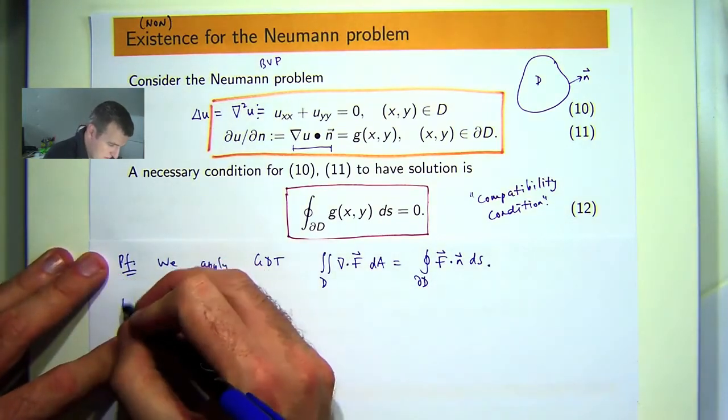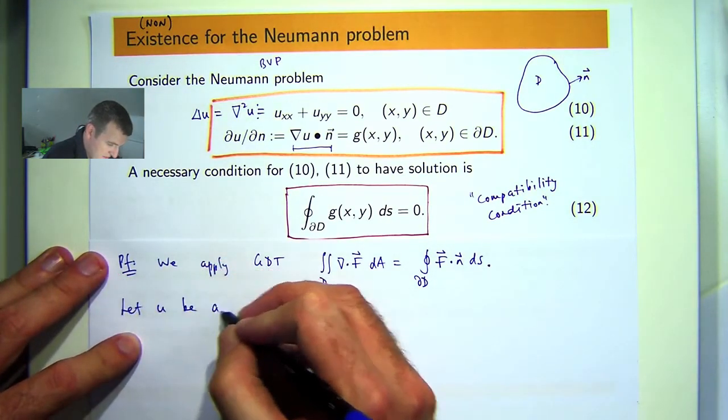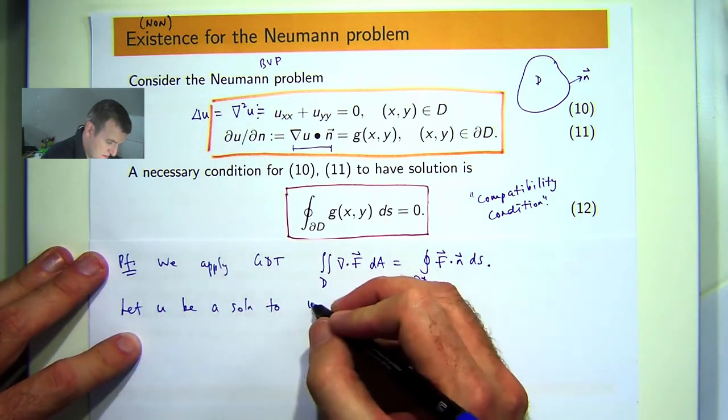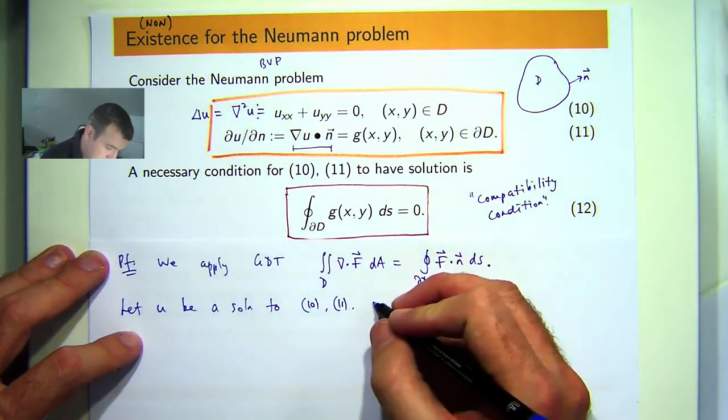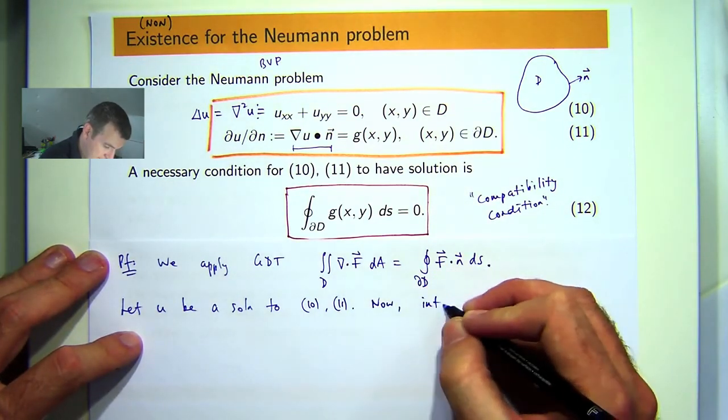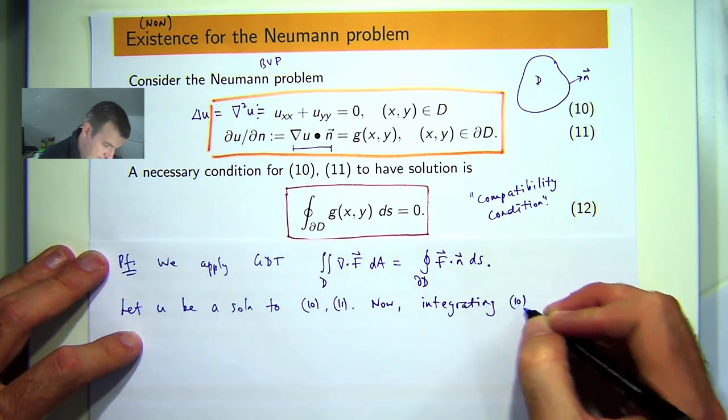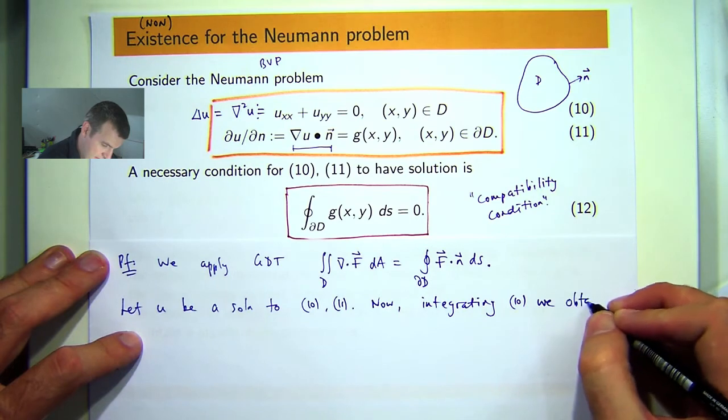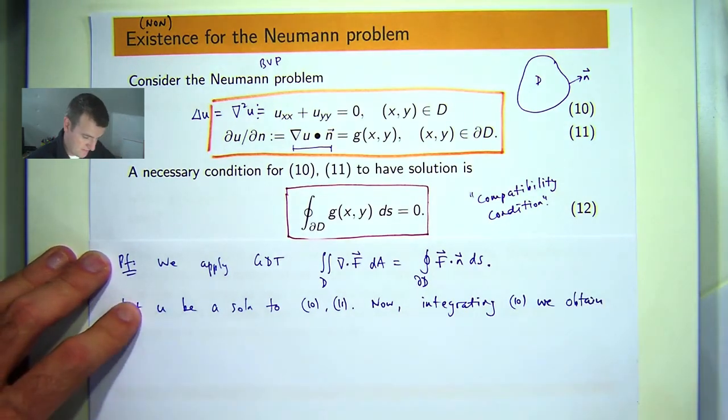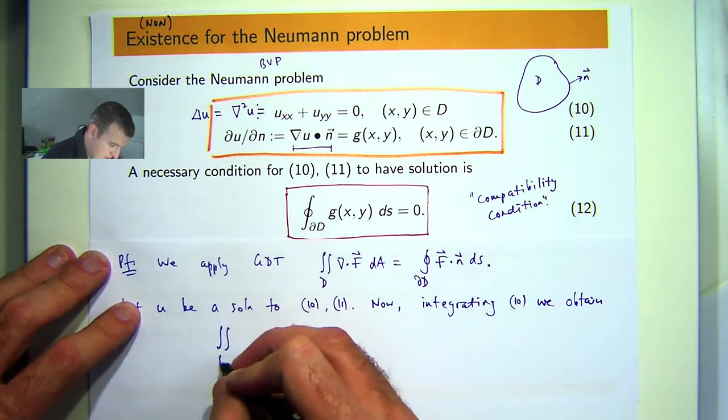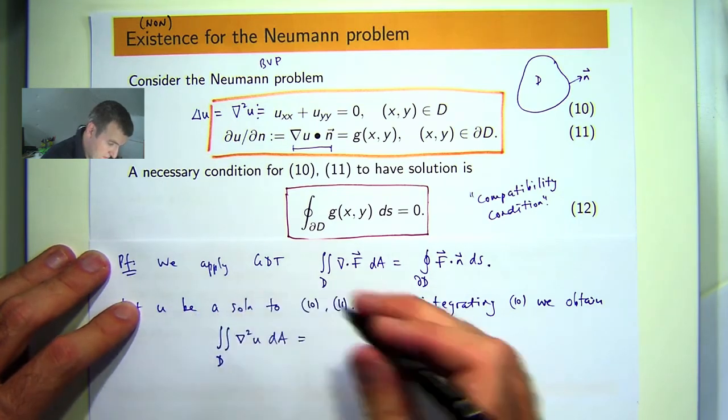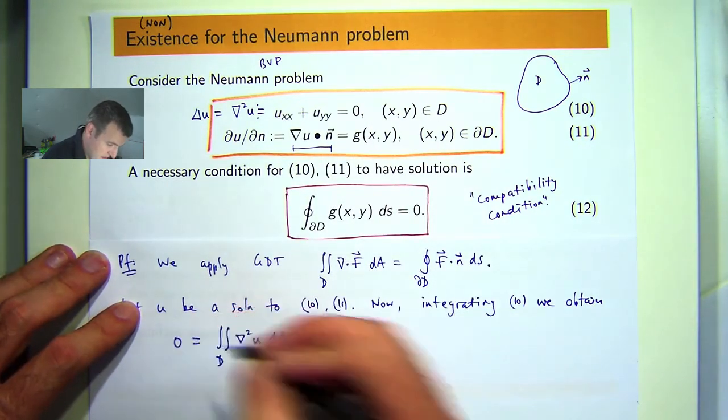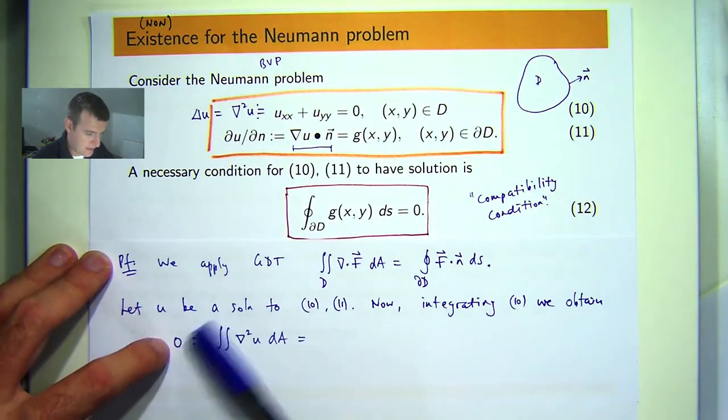So how do we apply it? Let u be a solution to 10-11. What I'm going to do is take the original PDE and integrate it over D. We're going to obtain the following. I'm just going to use the abbreviated notation here now. If I integrate both sides I'm going to get zero on the left hand side.